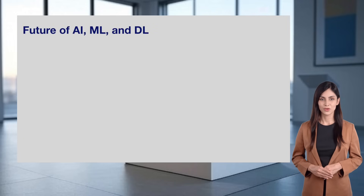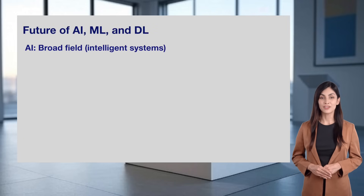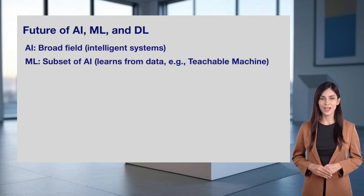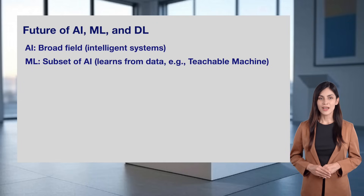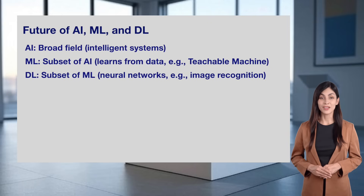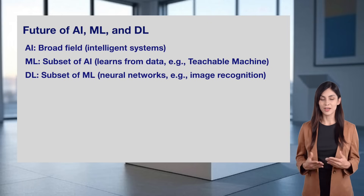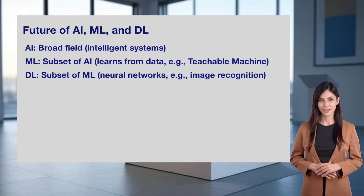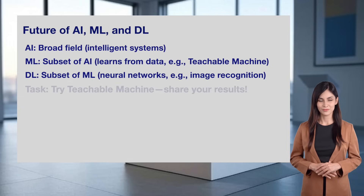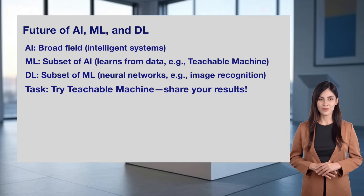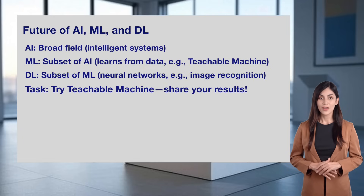Let's recap what we've learned today. AI is the broad field of creating intelligent systems. Machine learning is a subset of AI, focusing on learning from data, like Sophia showed with Teachable Machine. Deep learning is a subset of machine learning, using neural networks for complex tasks like image recognition. Here's your task: try Google's Teachable Machine yourself, train it to classify something simple like cats and dogs, and share your results in the comments. For more resources, visit wisdomacademy.ai to keep learning.